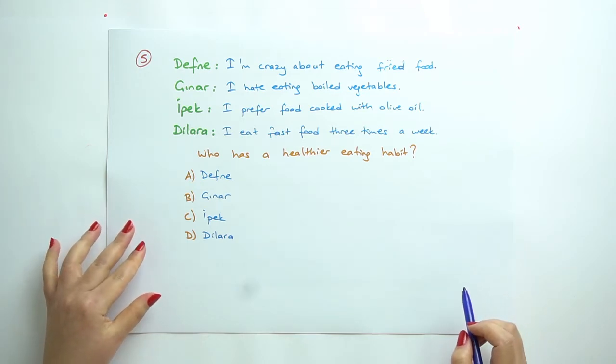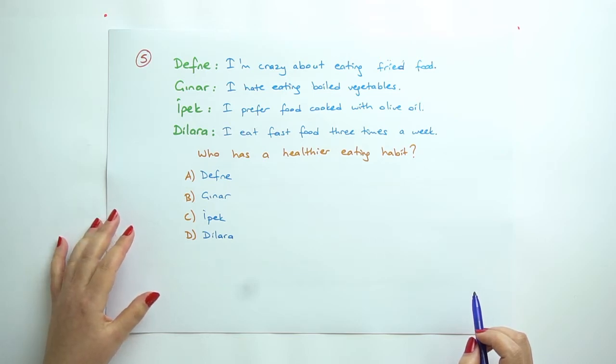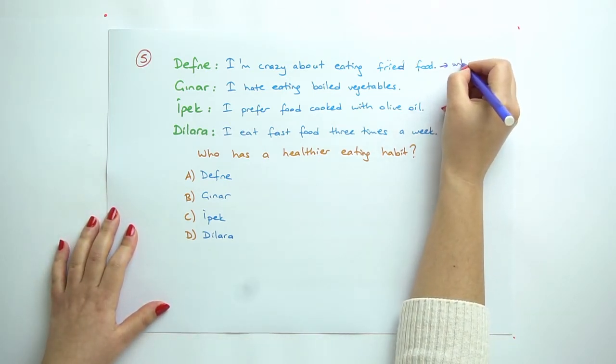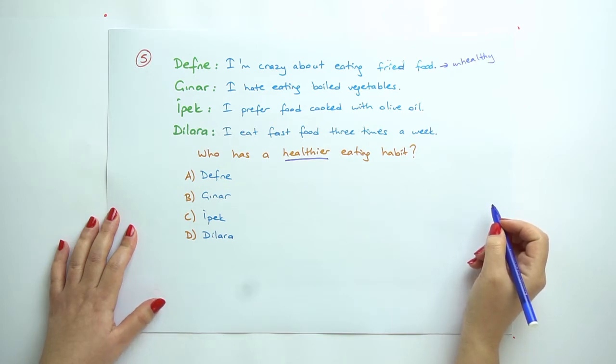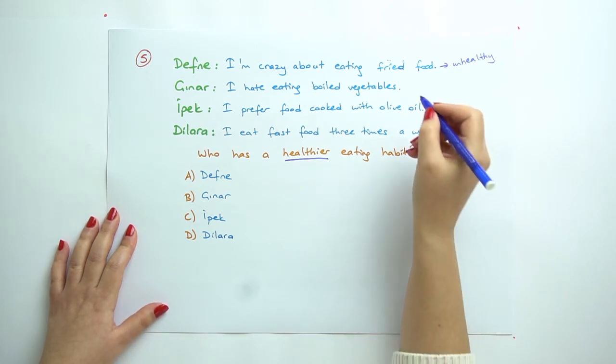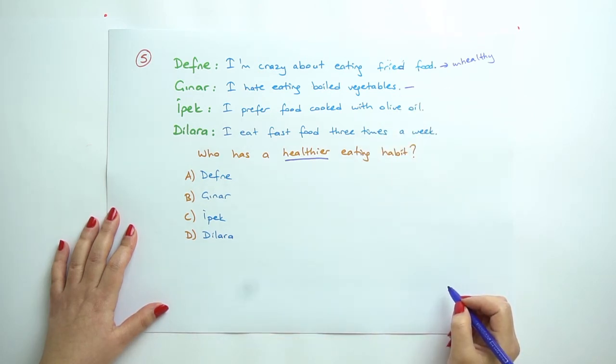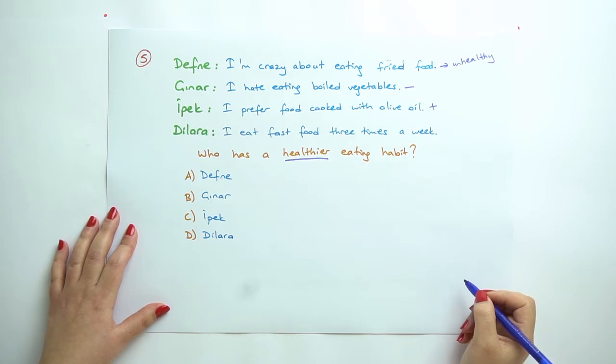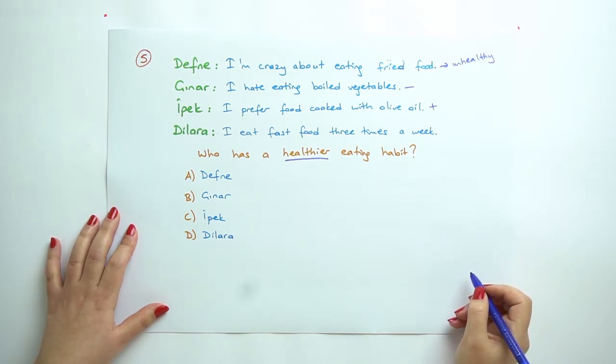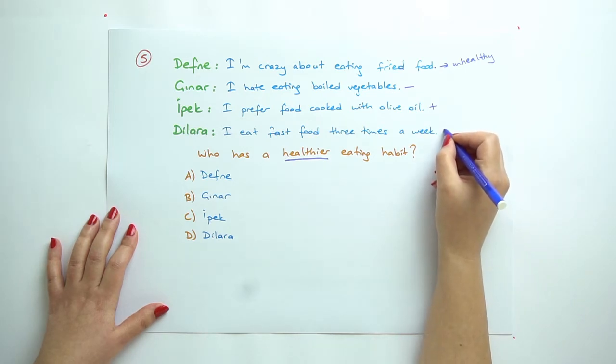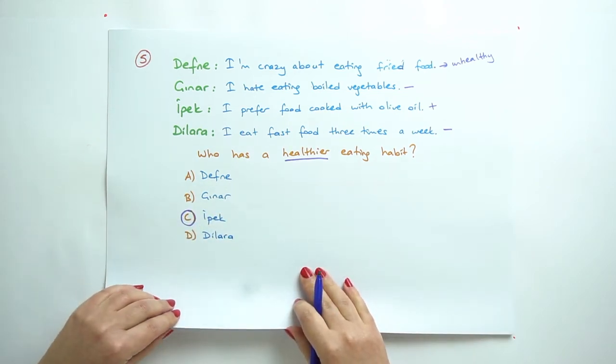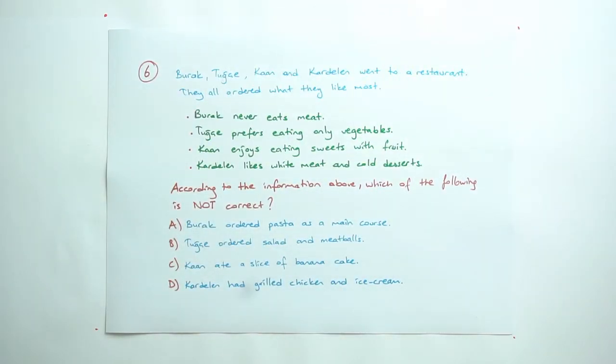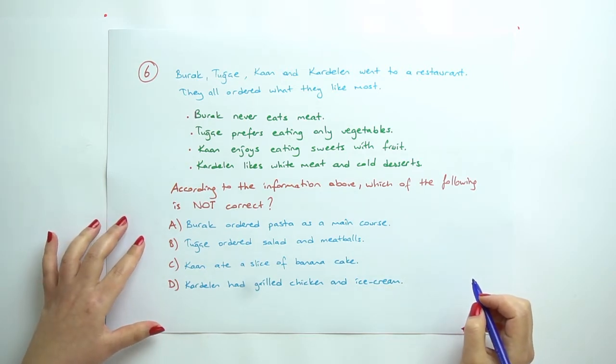Question 5: Who has a healthier eating habit? Defne: I'm crazy about eating fried food. This is unhealthy, but we need healthier. Gunes: I hate eating boiled vegetables. This is again unhealthy. Ipek: I prefer food cooked with olive oil. Yes, olive oil is healthy. Dilara: I eat fast food three times a week. No, we cannot say this one too. So Ipek has the healthier eating habits among these children.